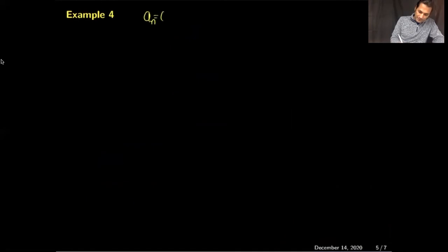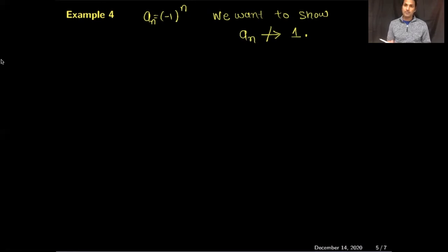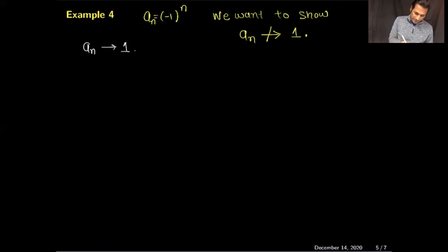Our fourth example: the sequence a_n = (−1)^n. We want to show the sequence a_n does not converge to 1 — in other words, the sequence is divergent. We will show this by contradiction. Assume a_n converges to 1, so for any ε > 0 there must exist a natural number N such that |(−1)^n − 1| < ε whenever n ≥ N.